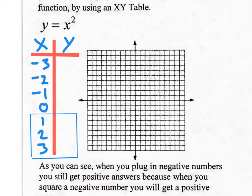Go ahead and make a quick x-y table and put the input values in for x: negative 3, negative 2, negative 1, 0, 1, 2, 3. Draw a little box around 1, 2, 3 — we're going to use that later. If you're watching at home, hit pause, do that, and we'll move right along.